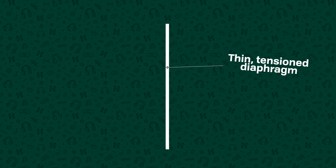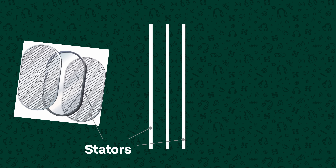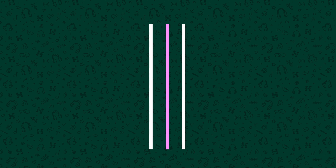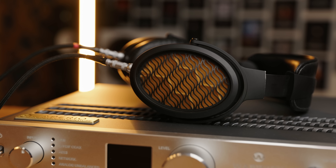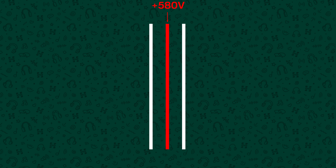Like a planar magnetic driver, an electrostatic driver has an ultra-thin sheet of tensioned diaphragm material, but instead of magnets it's sandwiched between two metal grids or stators. The diaphragm itself is coated with a very thin film of resistive material which can hold an electric charge. In most electrostatic systems a bias voltage of either 230 or 580 volts is applied to the diaphragm, but this can be as high as 1800 volts in some more complex systems. The bias voltage does not change in response to the audio signal — it's fixed and it's just there to make sure that the diaphragm itself is holding a constant static charge and will therefore be electrostatically repelled or attracted to nearby charged elements, i.e. the stators.